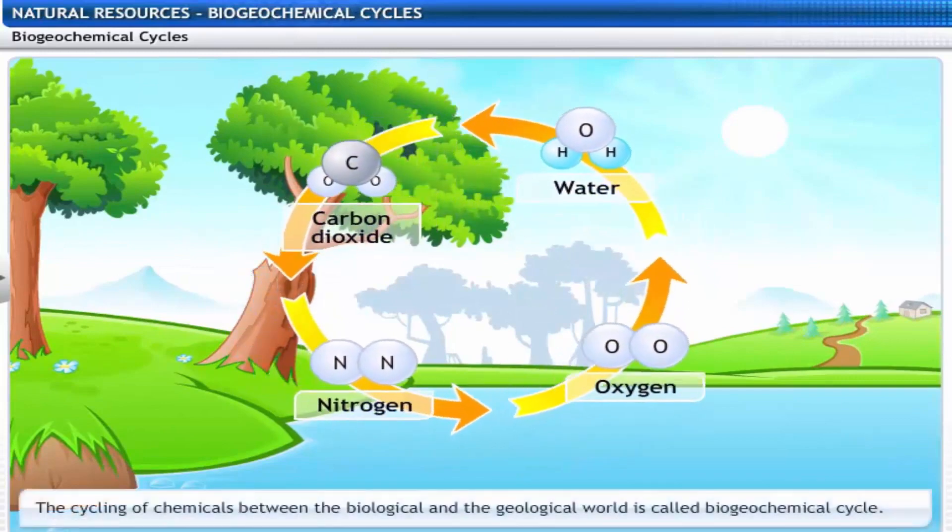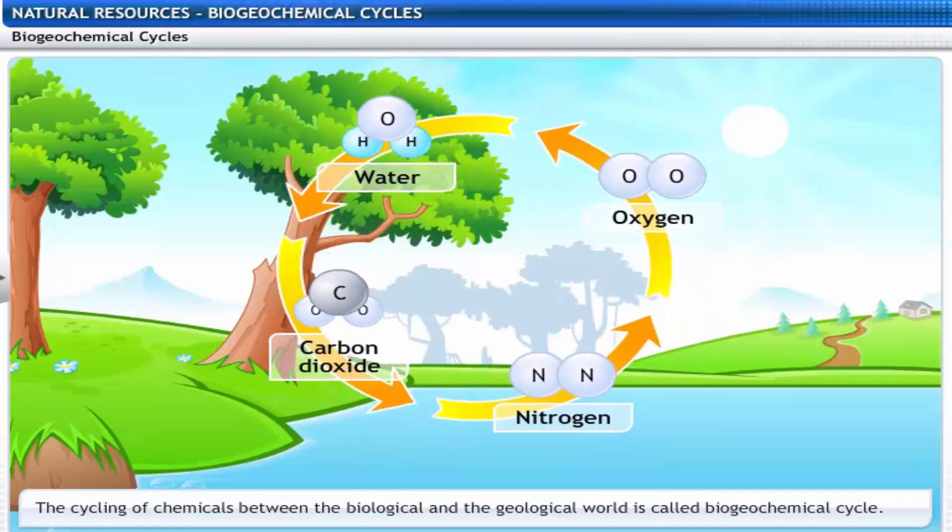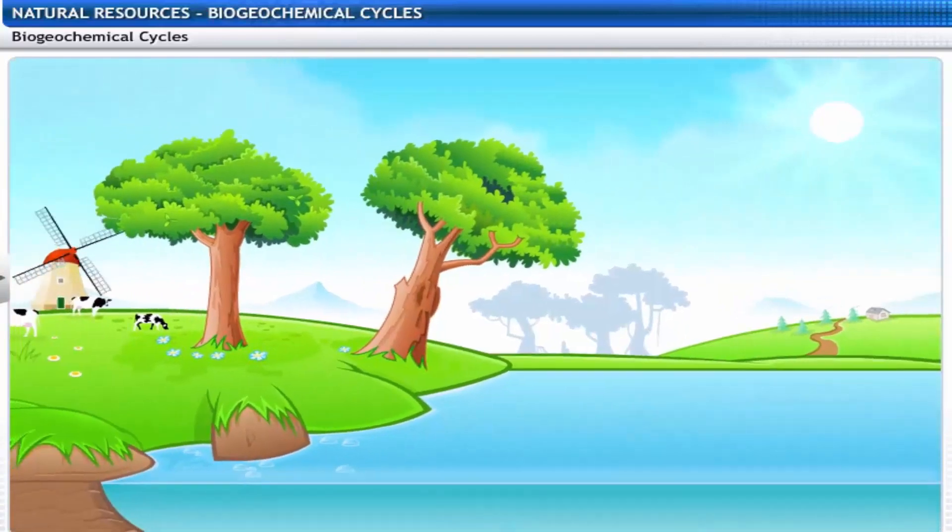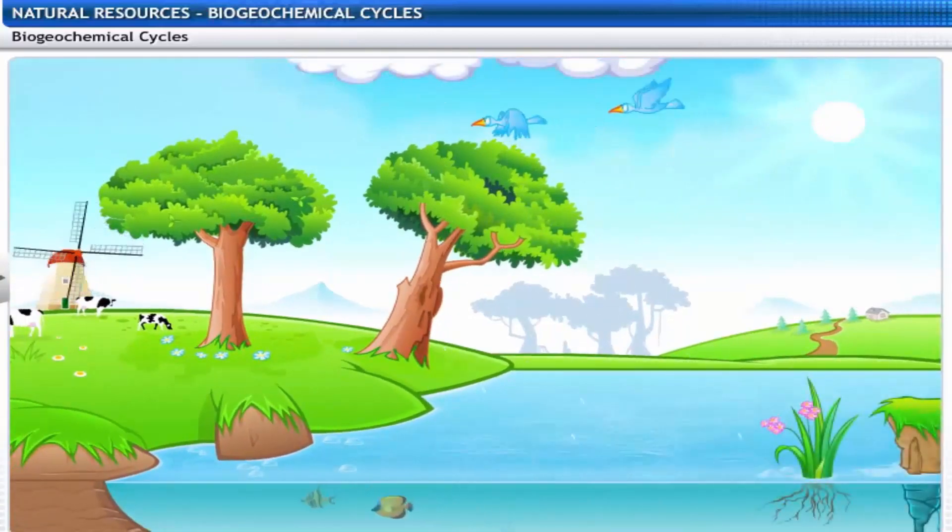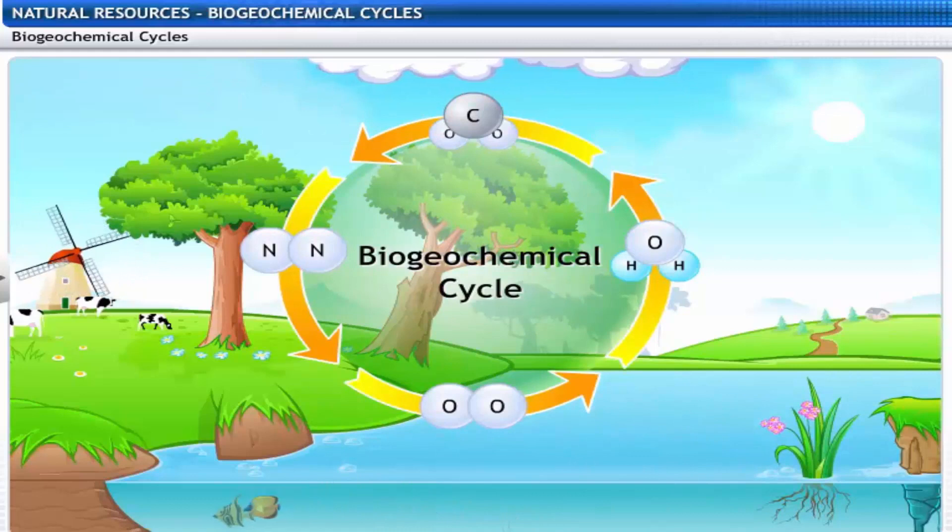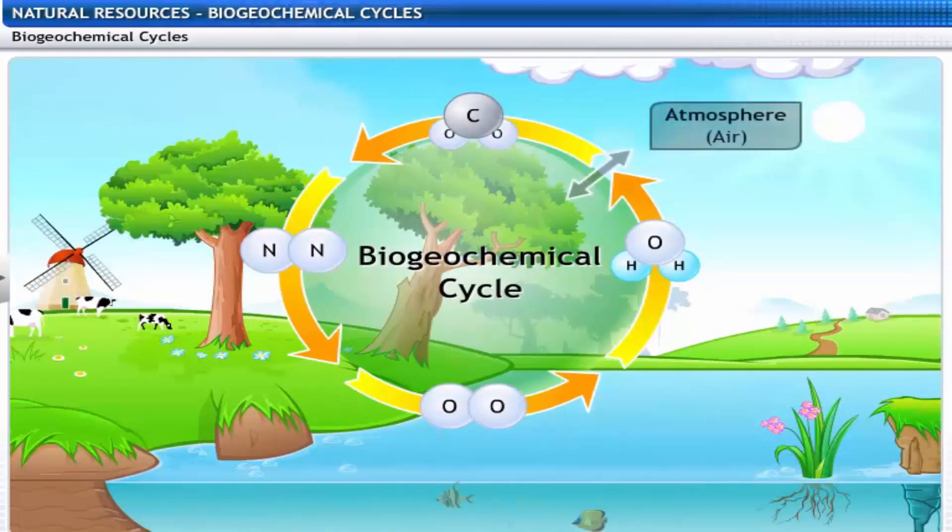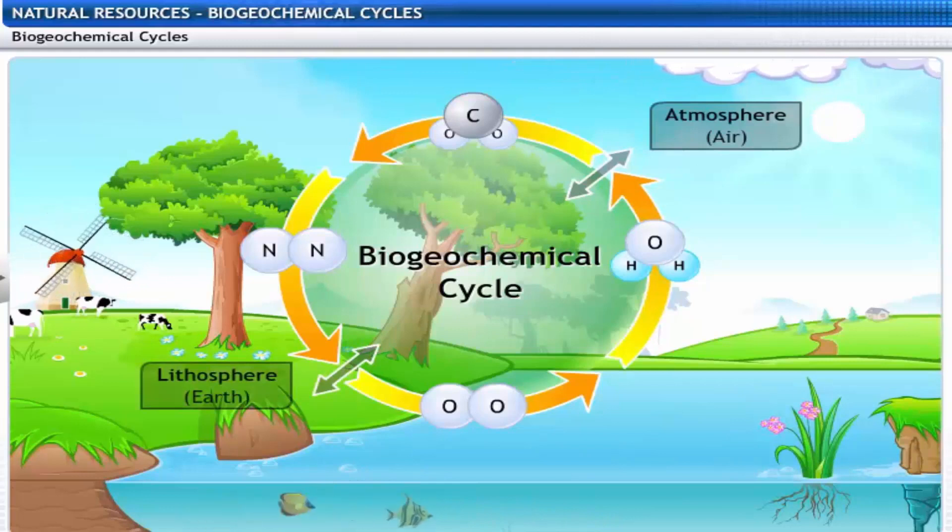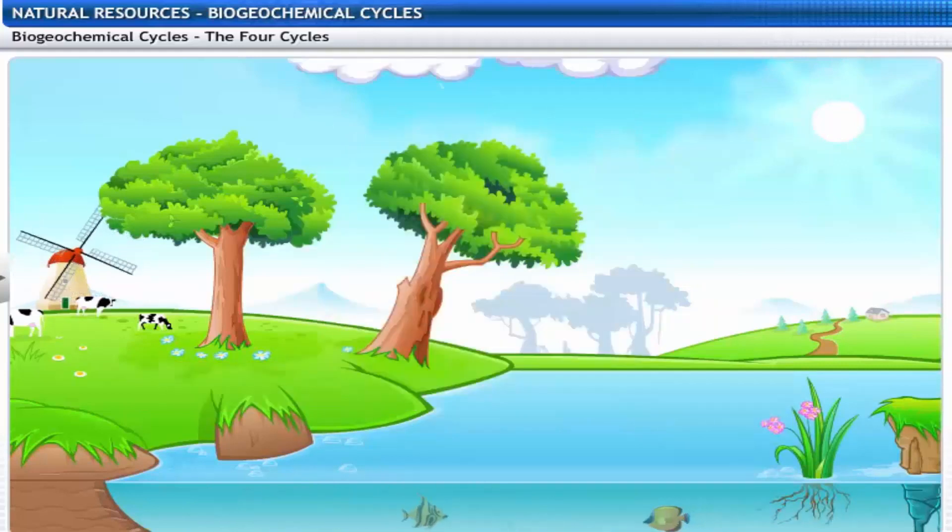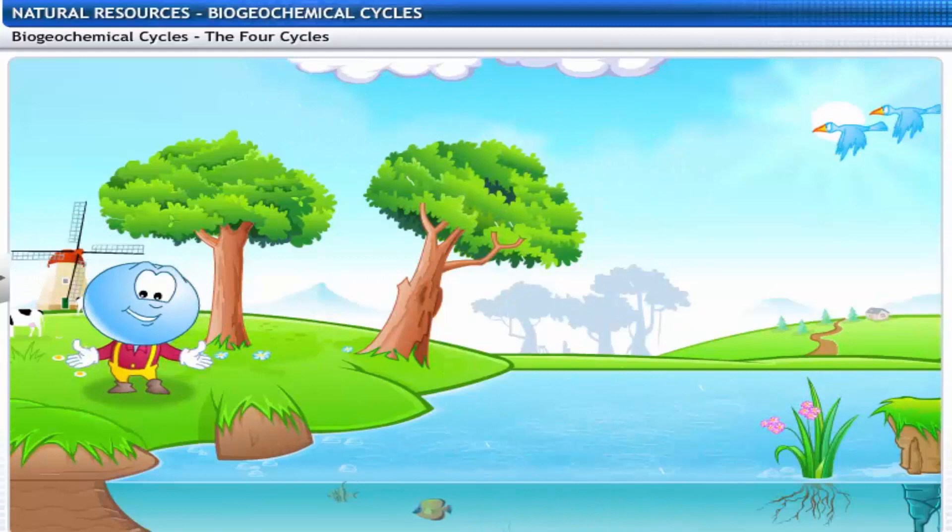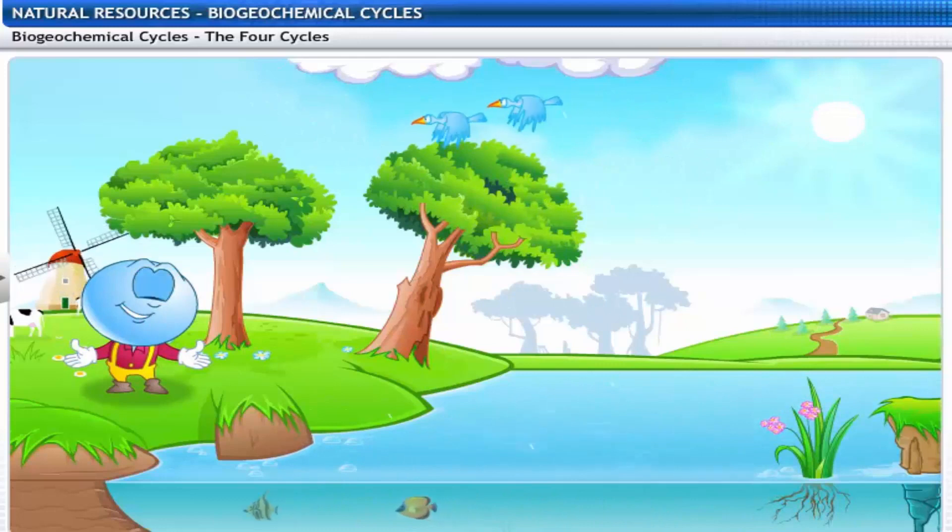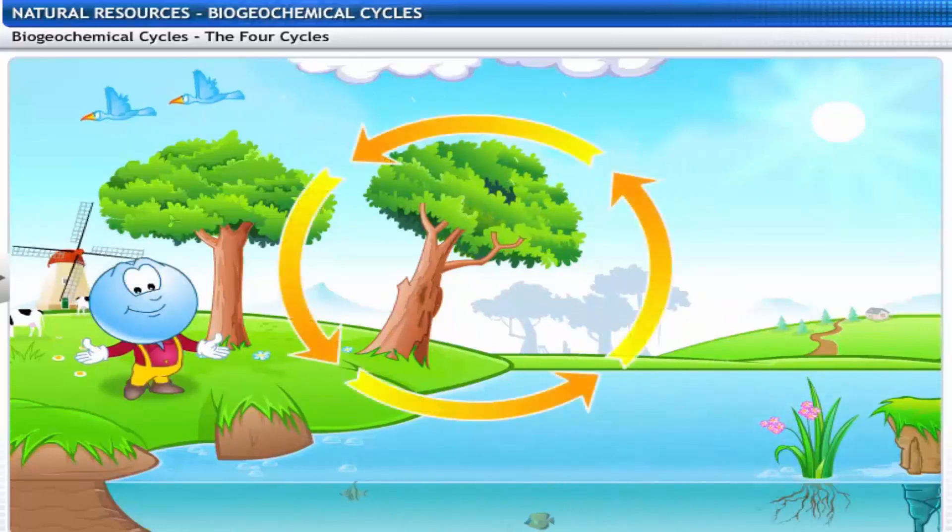The cycling of chemicals between the biological and the geological world is called biogeochemical cycle. The biotic and abiotic components of the biosphere constantly interact through these cycles. During these interactions, there is a transfer of nutrients between living organisms. I shall join you on this journey to explore the different biogeochemical cycles. Do you know the four most important biogeochemical cycles?